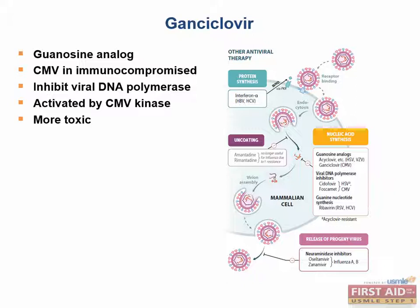An important thing to know about Ganciclovir is that it is more toxic than acyclovir and can cause a number of hematologic complications such as leukopenia, neutropenia, and thrombocytopenia. With these hematologic complications, this drug is less specific for virally infected cells and is more toxic to bone marrow cells, therefore causing these hematologic complications.